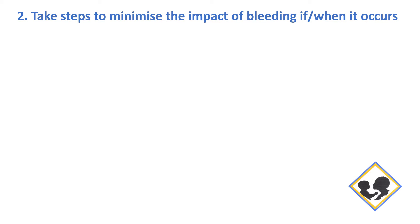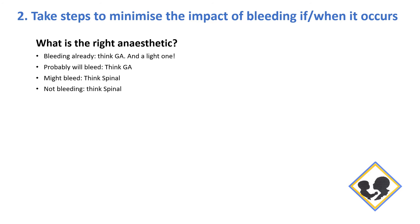When bleeding occurs, it's hard to then get set up. It's ideal that you take steps to minimize the impact of bleeding before it occurs so that when it happens, you're in control. Think about what is the right anesthetic to give before you start. If the patient is already bleeding or has a high likelihood of bleeding, a GA is probably the right way to go — give a general anesthetic if you have the skill set. If the patient might bleed or is not bleeding, then a spinal may well be appropriate, and we know it's the safer anesthetic in most cases.